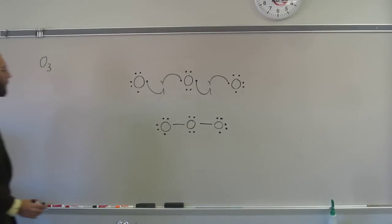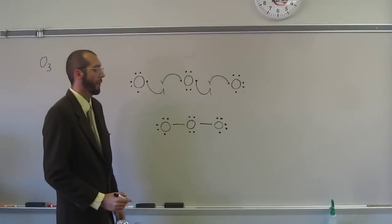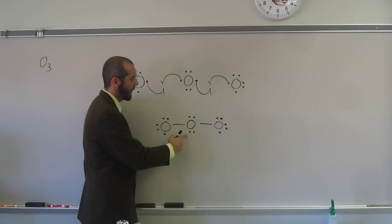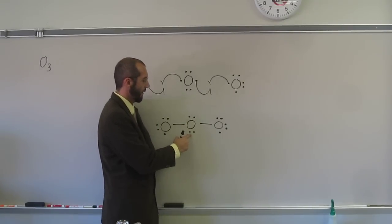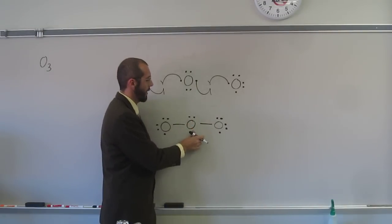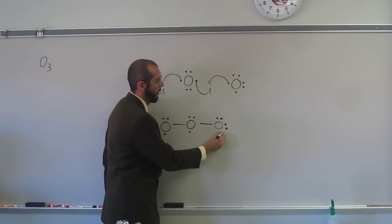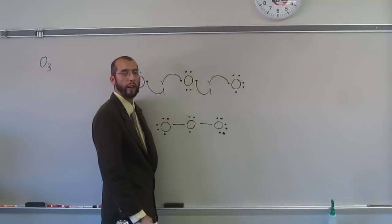So when we do that, when we have that, we can do something like this. So instead of having these two electrons be on this central oxygen, let's just take one of those electrons and move it to this far oxygen there.